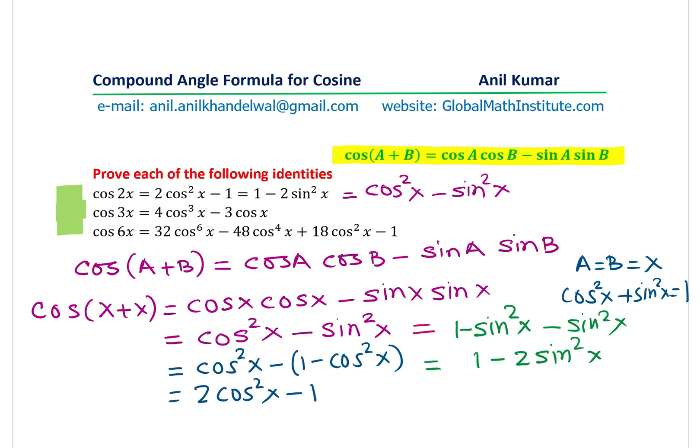You get an idea. So, from this stage, you could go either way and get these results. Perfect. So we got formula for cos 2x. And these are the variations.